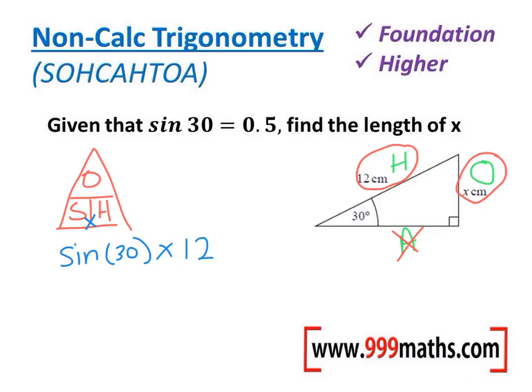Normally at this point I'd use my calculator, but in this question it's a non-calculator question. Notice in the question, it tells you that sine 30 equals 0.5, so I can actually just change that to 0.5, and now multiply that by 12, because sine 30 is 0.5. 0.5 times by 12 would be 6, and we're in centimeters, so the answer to this question is 6 centimeters.